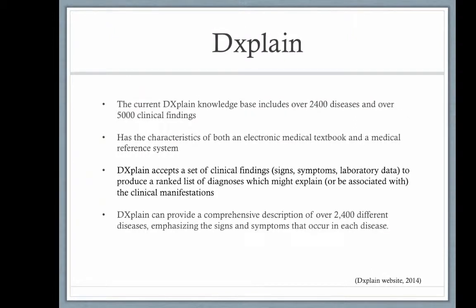DXplain is a CDSS which uses a knowledge base and rules. The current knowledge base includes over 2,400 diseases and over 5,000 clinical findings. DXplain can act both as an electronic textbook and as a medical reference system. As an electronic medical textbook you can find descriptions of over 2,400 different diseases, and as a medical reference system DXplain can provide up to 10 references for each disease it contains.